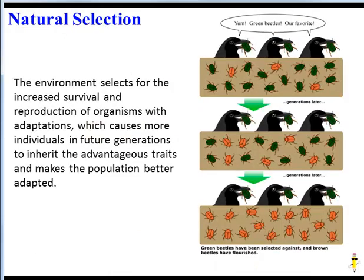Here's the definition of natural selection: the environment will select for the increased survival and reproduction of organisms with adaptations — for example, in this scenario, the brown insects. That will cause individuals in future generations to inherit advantageous traits, and eventually make the population better adapted to its environment.